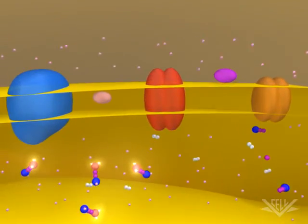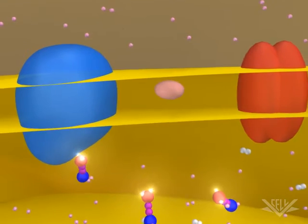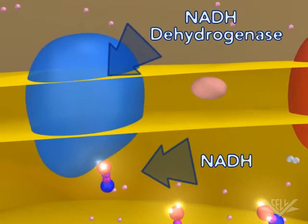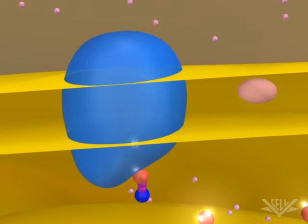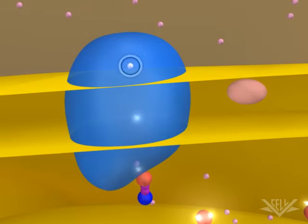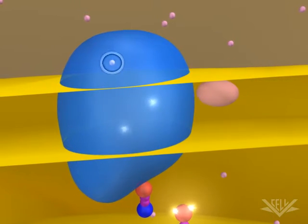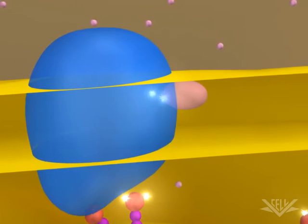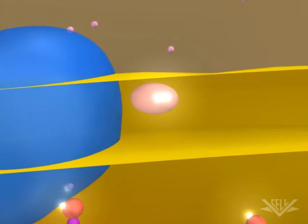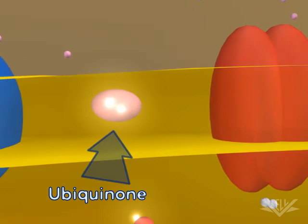At the start of the electron transport chain, two electrons are passed from NADH into the NADH dehydrogenase complex. Coupled with this transfer is the pumping of one hydrogen ion for each electron. Next, the two electrons are transferred to ubiquinone.